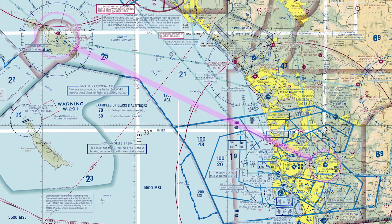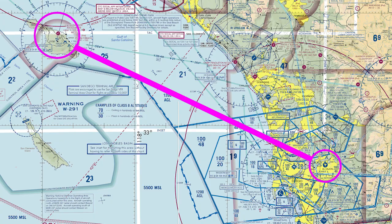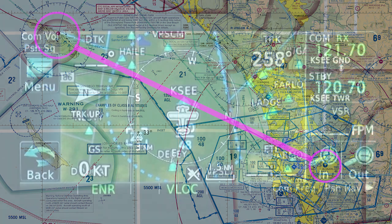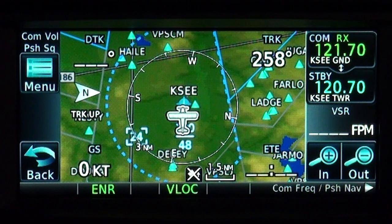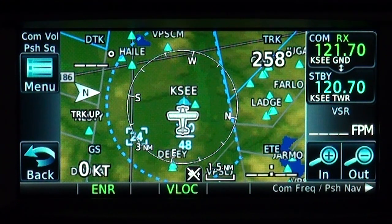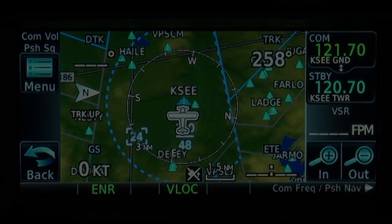Today, we're going to fly from our home airport at Gillespie Field to the famous airport of Catalina on Catalina Island. Before we taxi, let's take a look at how we can use the 650 to plan our flight.